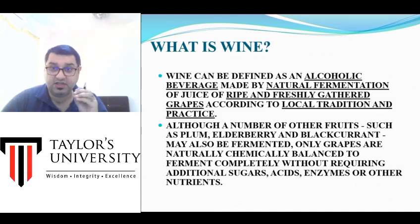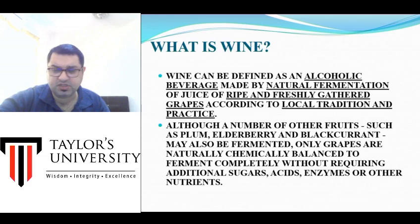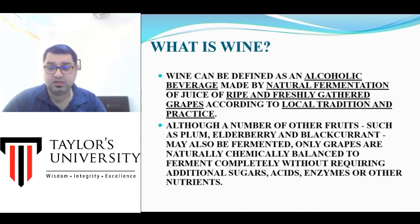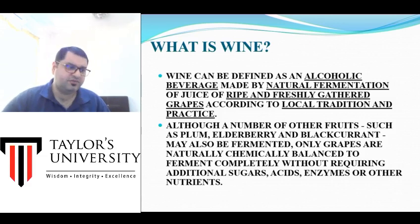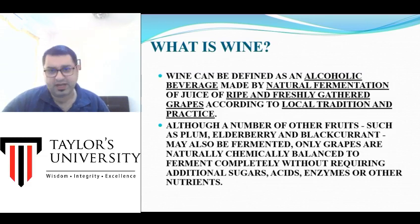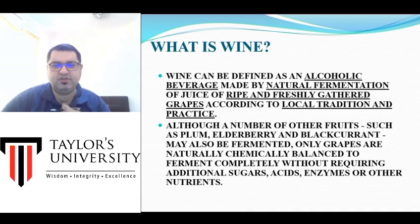The last key phrase is according to local traditions and practice. This refers to countries like France, Italy, Spain, Portugal, and Germany, which have been making wine for hundreds of years. Wine was also made in ancient Egypt and other countries but that was lost in time. You can use other fruits to make a fermented beverage — blackcurrant wine or plum wine — but when you use the word wine alone, it means it is made from grape juice.